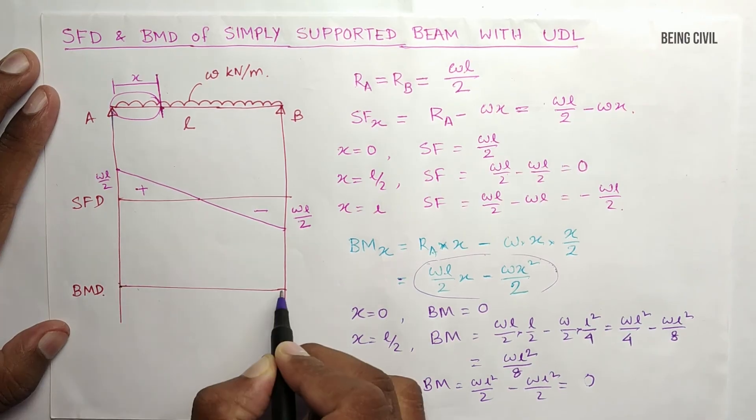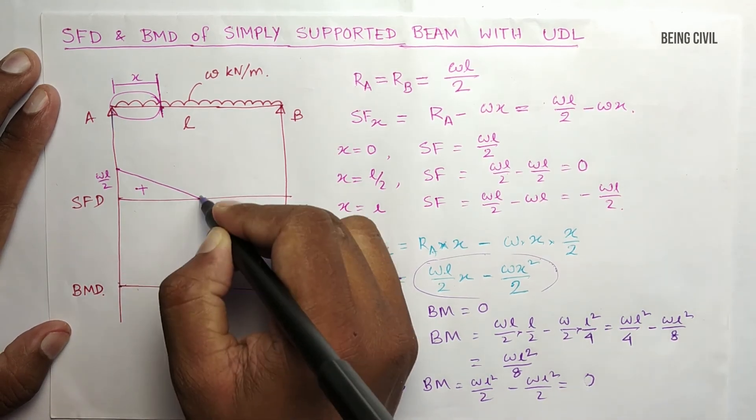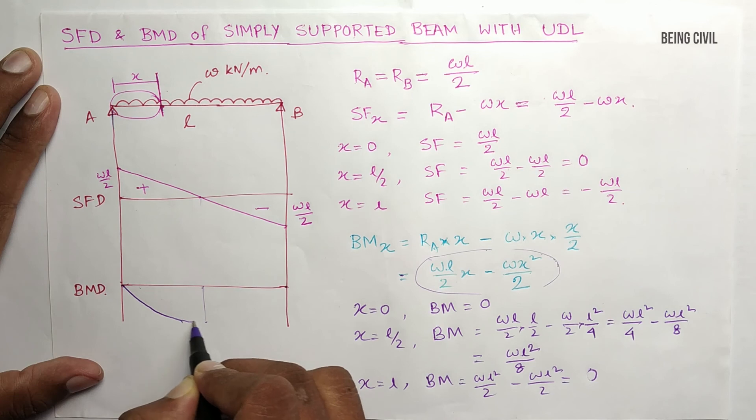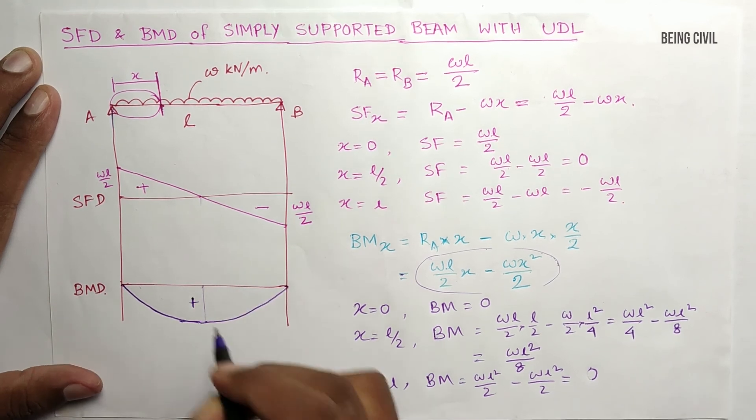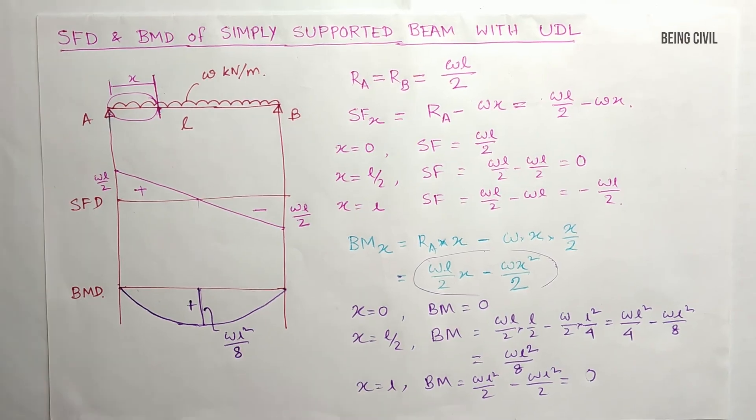Here the moment is 0, and also here the moment is 0. At midpoint, the moment is maximum, so the diagram will be like this. This is a positive sign, and this ordinate is WL square by 8. That's the shear force and bending moment diagram of the simply supported beam with UDL.